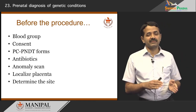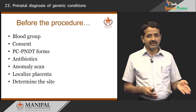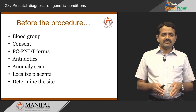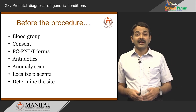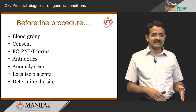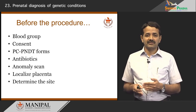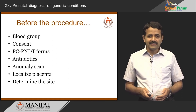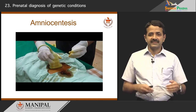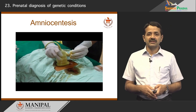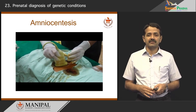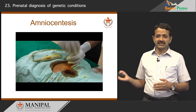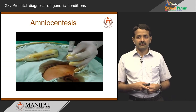Before the procedure, we take the blood group — if the lady is RH negative, we give anti-D immunoglobulins to prevent RH isoimmunization. We take consent and fill PCPNDT forms as per the law. Some centers give antibiotics, some do not, but institutional practice should be followed. An anomaly scan should be done before the procedure whenever possible — localize the placenta, confirm the baby is alive, and determine the site for the procedure. I will now show how amniocentesis looks from outside: the abdomen is cleaned under aseptic precautions, and a fine needle is passed through the abdomen of the pregnant lady to collect amniotic fluid.